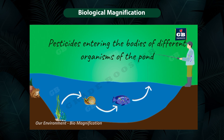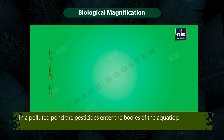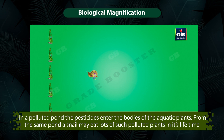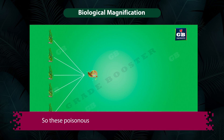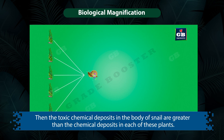If a pond is contaminated by pesticides and insecticides, these chemicals enter the bodies of aquatic plants and animals present in that pond. The amount of pesticide residue increases as we go up in a food chain. In a polluted pond, the pesticides enter the bodies of aquatic plants. A snail may eat lots of such polluted plants in its lifetime, so the chemical deposits in the body of the snail are greater than the chemical deposit in each of the plants.